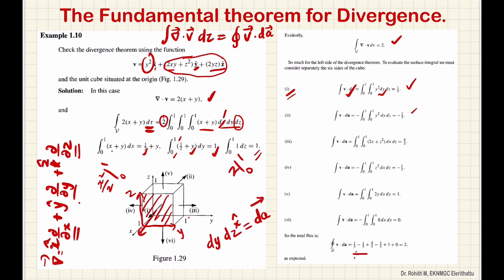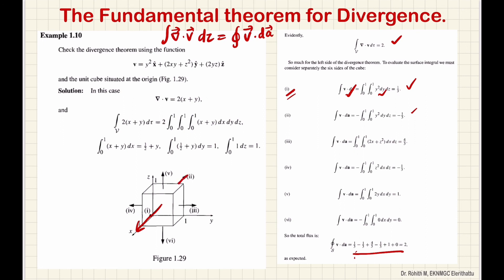All the flux contributions from each face must be added together. The sign is important: for the first surface the outward normal is positive, and for the opposite surface it is in the opposite direction so it contributes negatively. Adding all surface integrals gives a total of 2, which is the same as the volume integral of the divergence. So we can see the divergence theorem is verified.